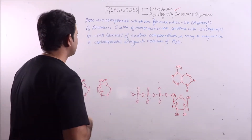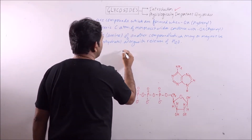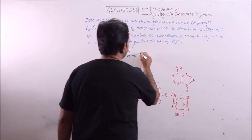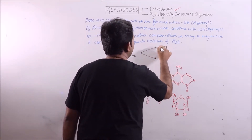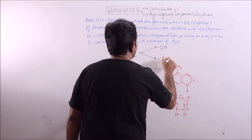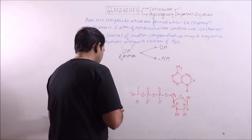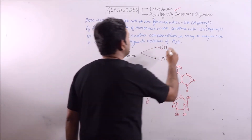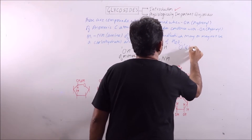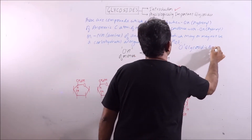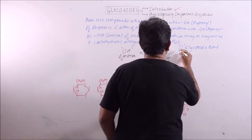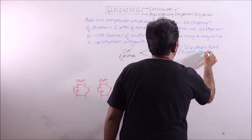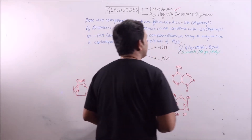So it is clear that the condensation is between the hydroxyl group of a monosaccharide and either the hydroxyl group of another compound or an amine group. If the hydroxyl group of a monosaccharide condenses with the hydroxyl group of another compound, then it is known as an O-glycosidic bond. This is observed in disaccharides, oligosaccharides, or during formation of polysaccharides.